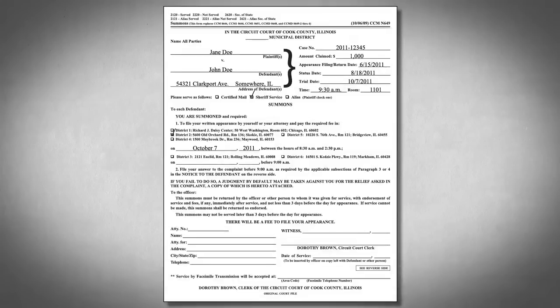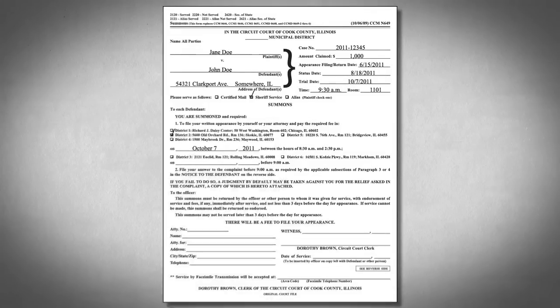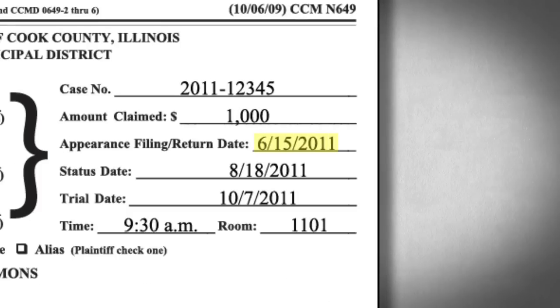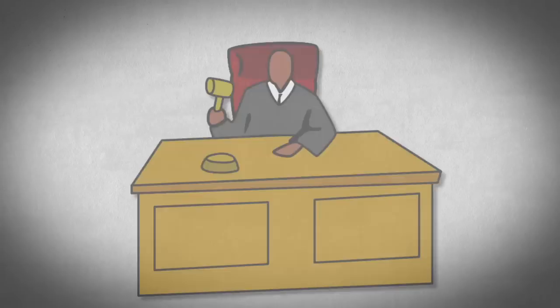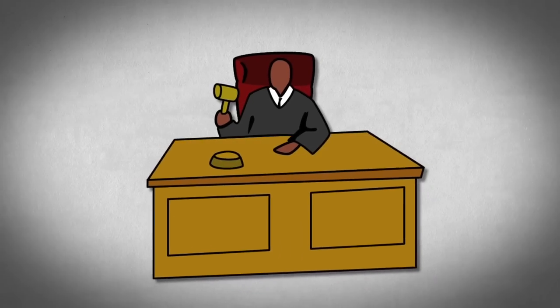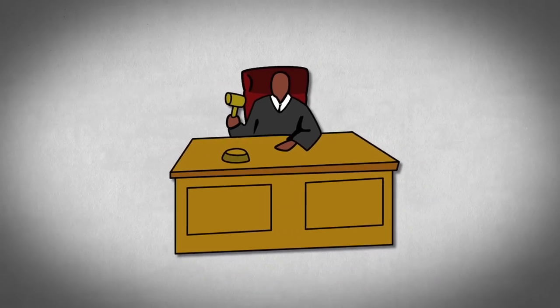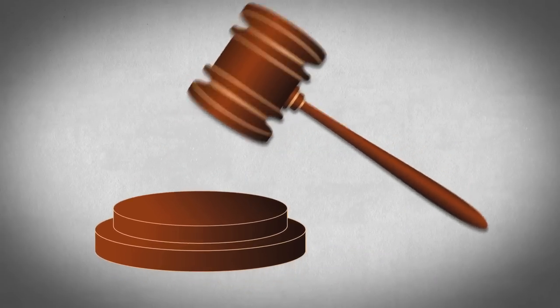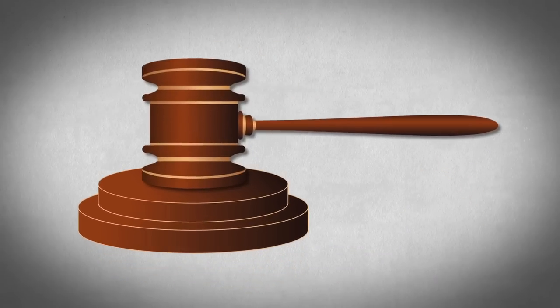Remember that you typically must file your appearance and answer by a certain date. Look at the summons you receive with the complaint to find the date that you must file your appearance and answer by. If you don't file by that date, the judge can find against you in the lawsuit without hearing your side of the case.